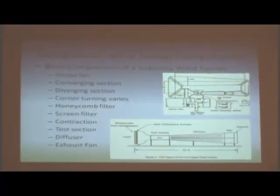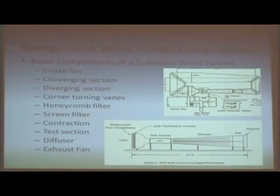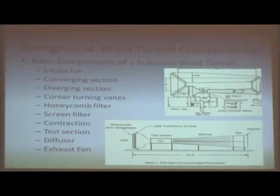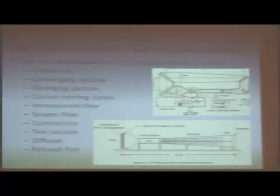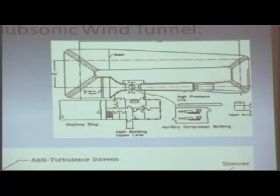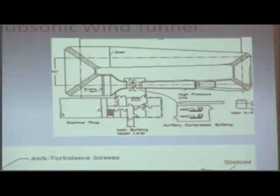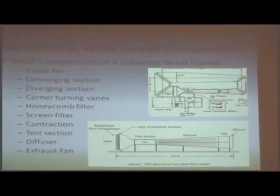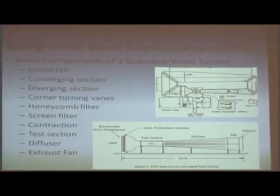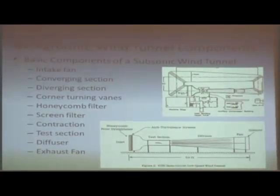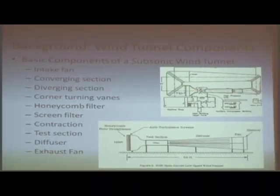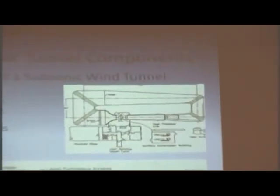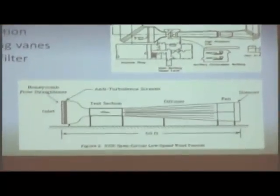Some of the basic components of a subsonic wind tunnel include an intake pan, a converging section, a diverging section, corner turning vanes, honeycomb filters, screen filters, a contraction, a test section where you place your model, a diffuser, and a fan. There are two basic types: a closed loop wind tunnel and an open loop wind tunnel, which I'll cover on the next slide.